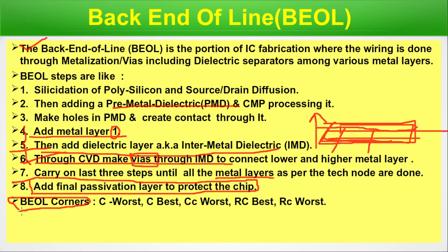Parameters of semiconductor fabrication are statistically distributed because it's not an ideal process. Not all two devices have all the same properties — some variation occurs in length, width, oxide thickness, and other dimensions. Since devices are very small, even half a nanometer is a crucial factor. For a batch of ICs, we define a range of values at extreme corners such as C worst, C best, CC worst, RC best, and RC worst.